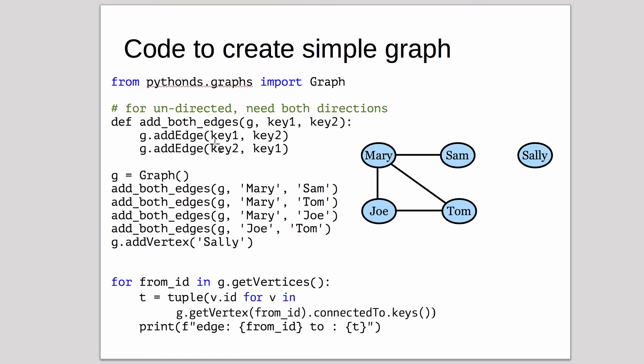Add both edges to graph G, key1 and key2. So it calls it with key1 and key2, and key2 and key1 to add those two edges.